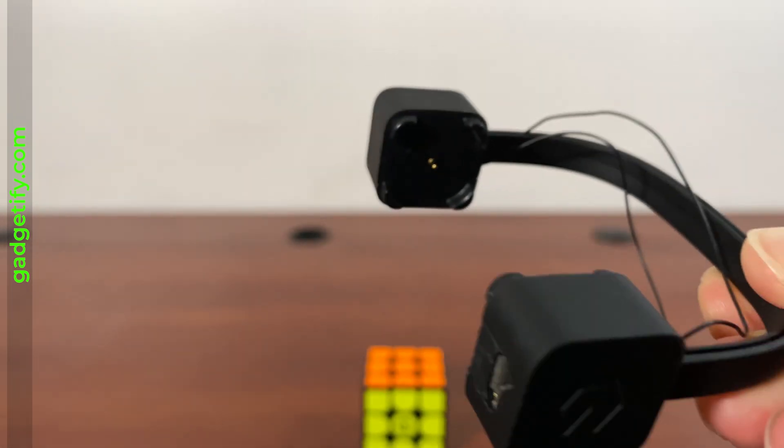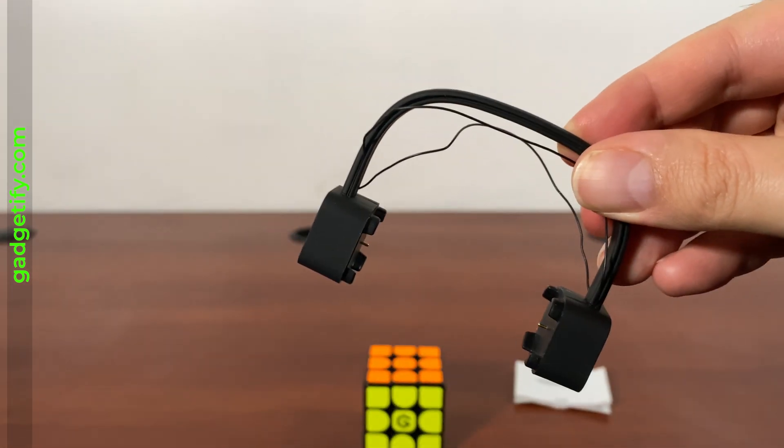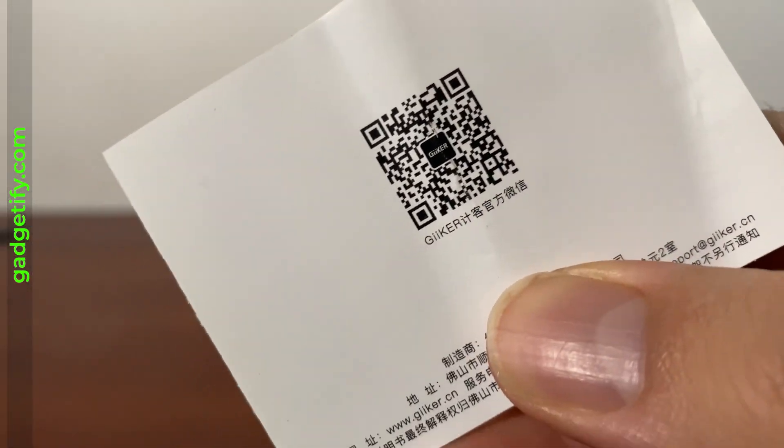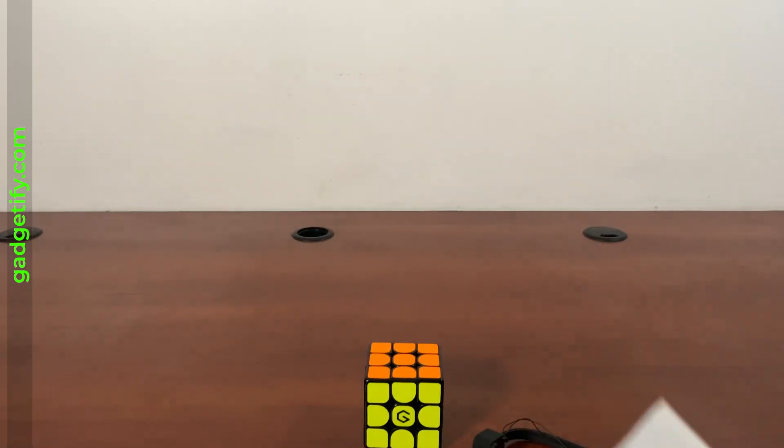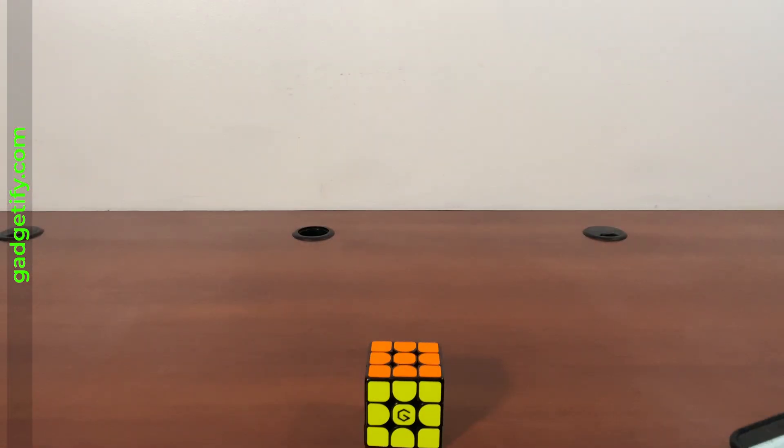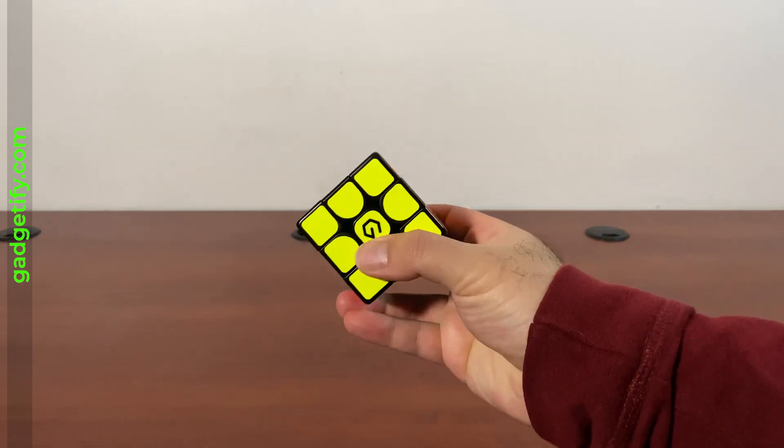This is the connector type. I'm going to download the app. The app is available through the code here. So you just download it and you're ready to use this cube. So you just have to download the SuperCube app and then pair it to this and you're ready to go.